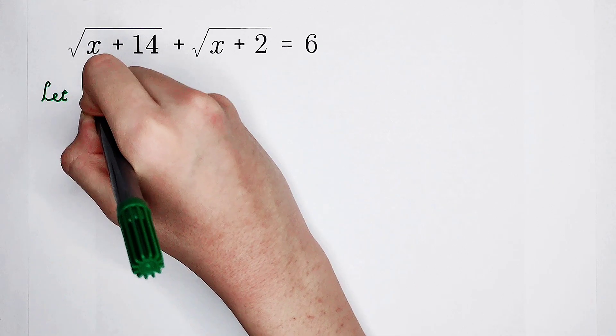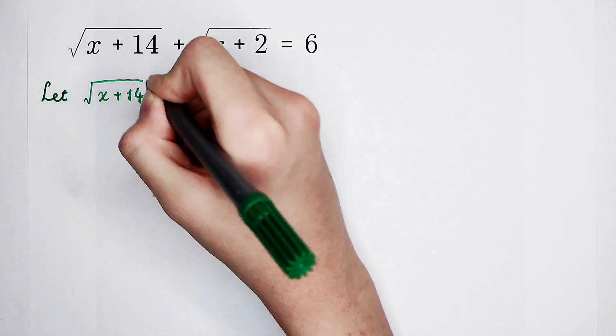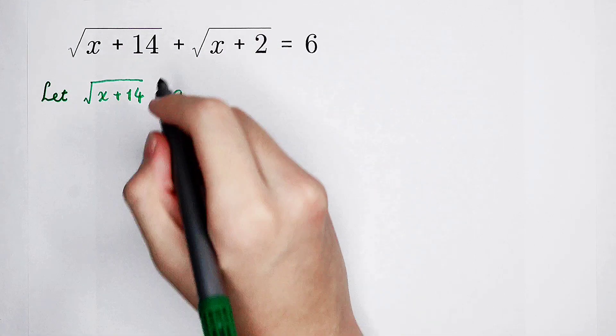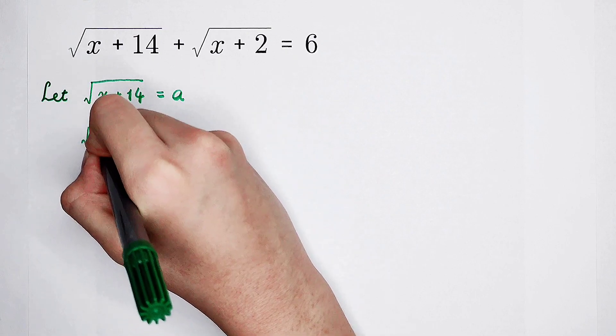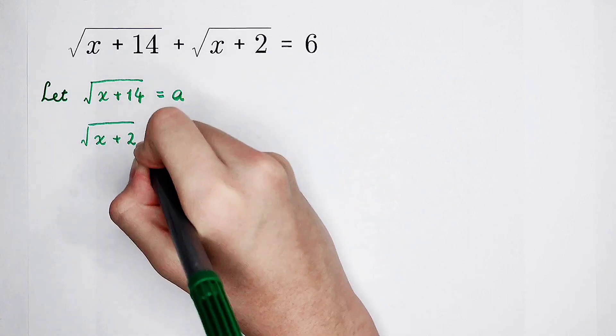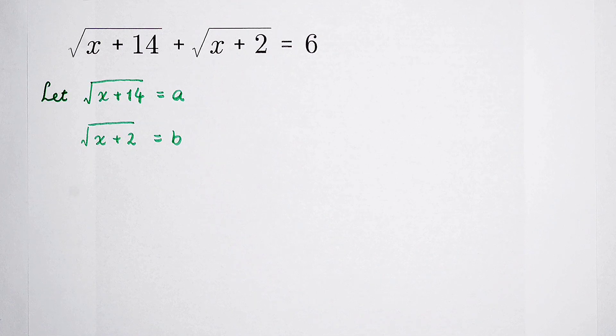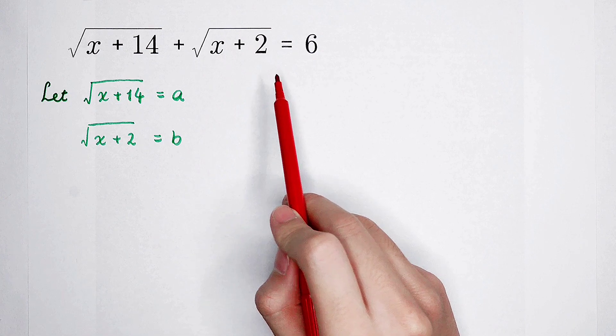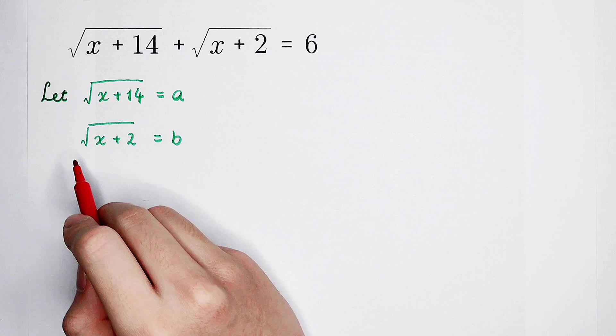square root of x plus 14 is a. And this guy, square root of x plus 2, is b. Of course, this equation becomes an equation about a and b. So, a plus b is 6. Square root, square root. We all hate square roots.